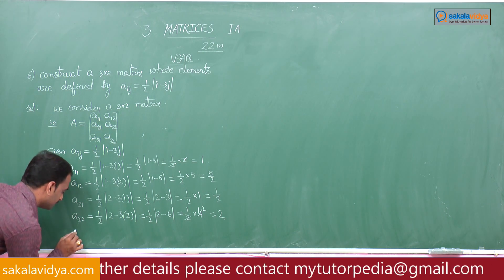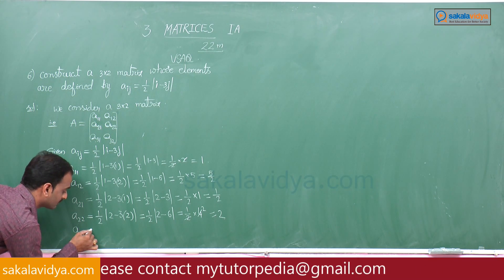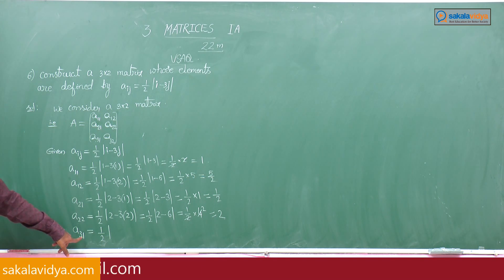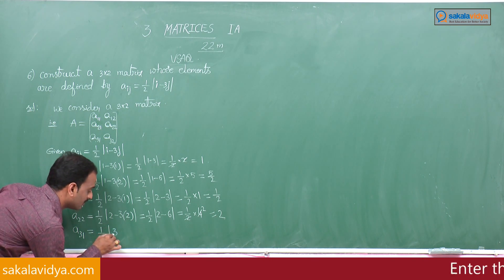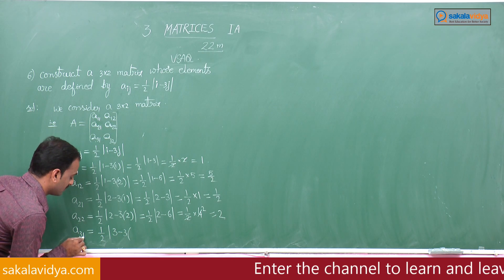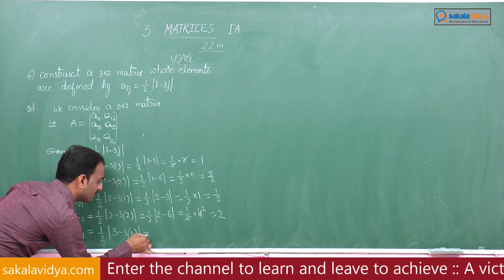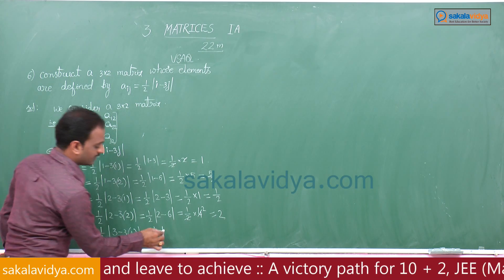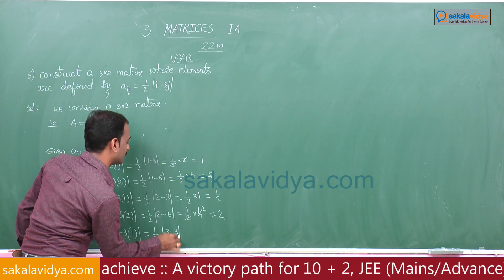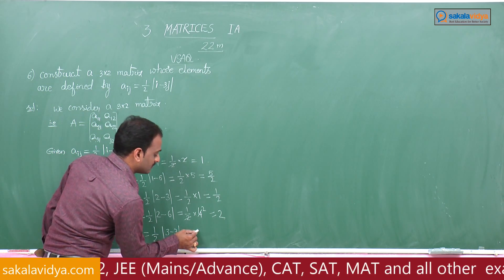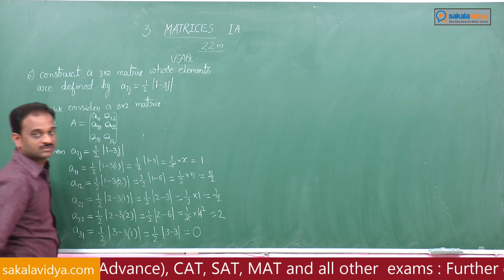Next element a31: third row, first column, so i equals 3 and j equals 1. We get 1 by 2 into mod of 3 minus 3 into 1, that is 1 by 2 into mod of 3 minus 3, which is 1 by 2 into mod of 0. So a31 equals 0.